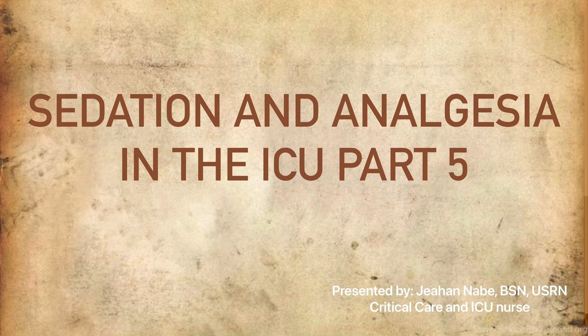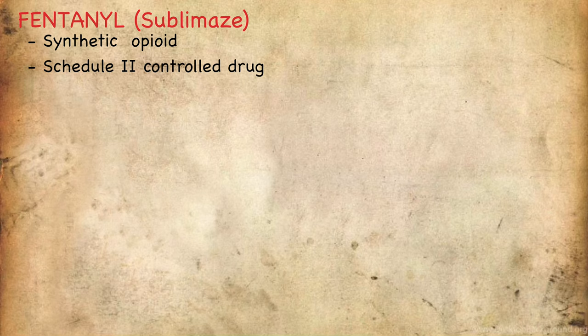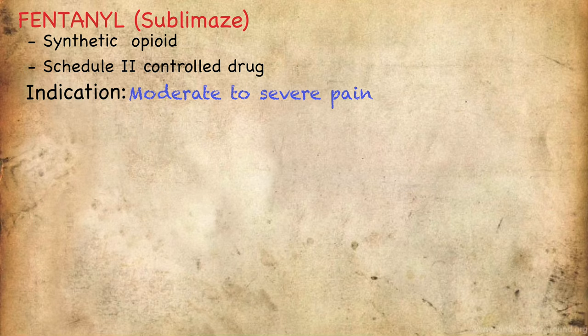The first analgesic on our list is fentanyl, one of the synthetic opioids used in the ICU. It is under Schedule 2 of the controlled drugs, indicated for moderate to severe pain and for continuous opioid analgesic therapy. Its action, like other opioids, is to bind to opioid receptors in the central nervous system, altering the response to and perception of pain, thereby producing analgesic effects.